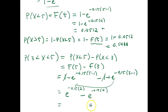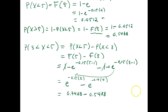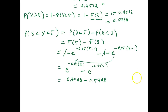We've already calculated these values: e to the negative 0.15 times 2 equals 0.7408, and e to the negative 0.15 times 4 we found as part of 0.5488. So the probability that the waiting time is between 3 and 5 seconds equals 0.1920.